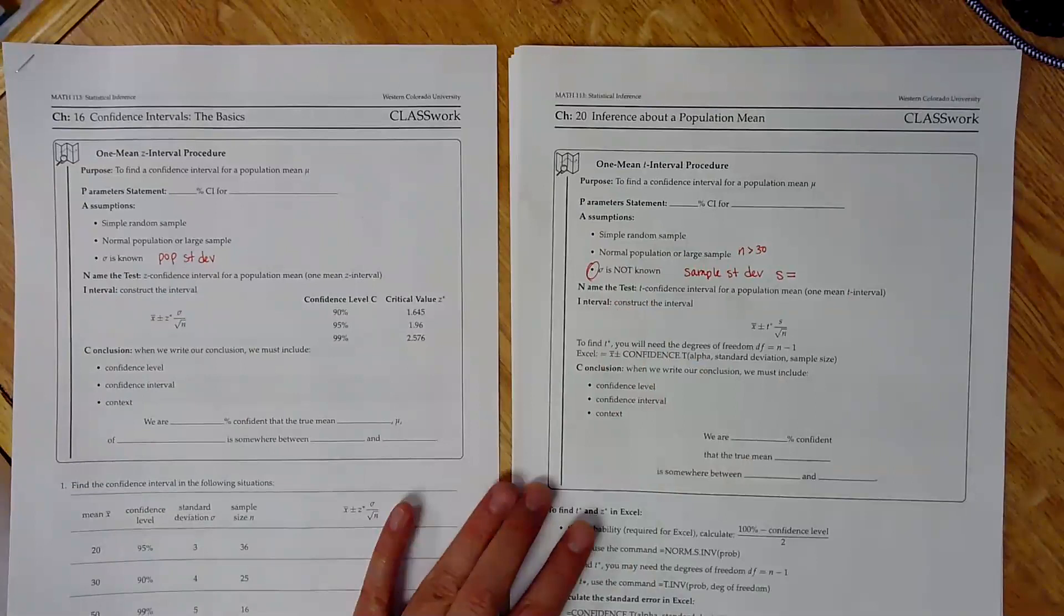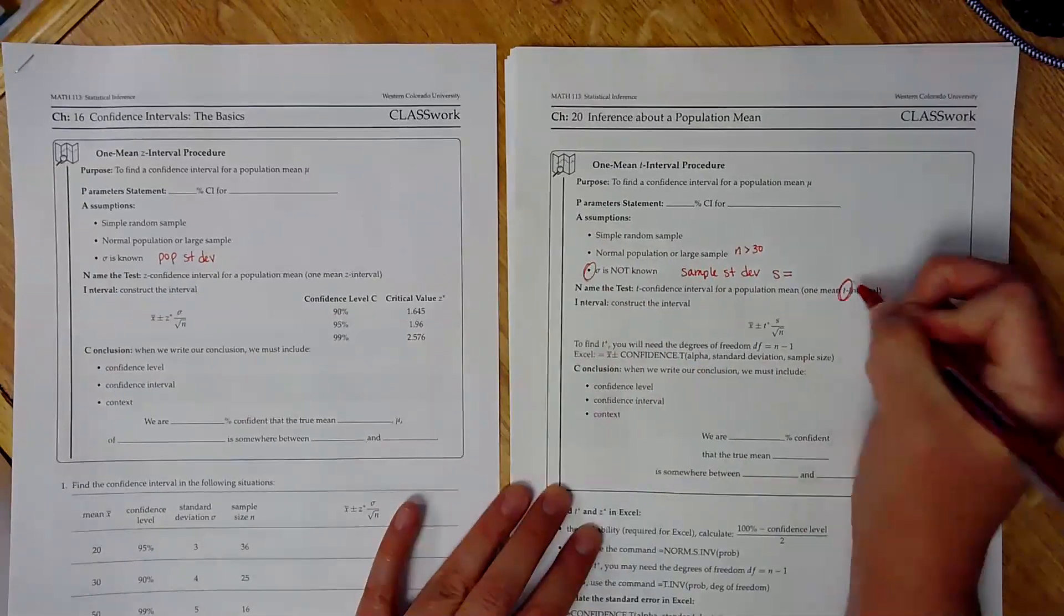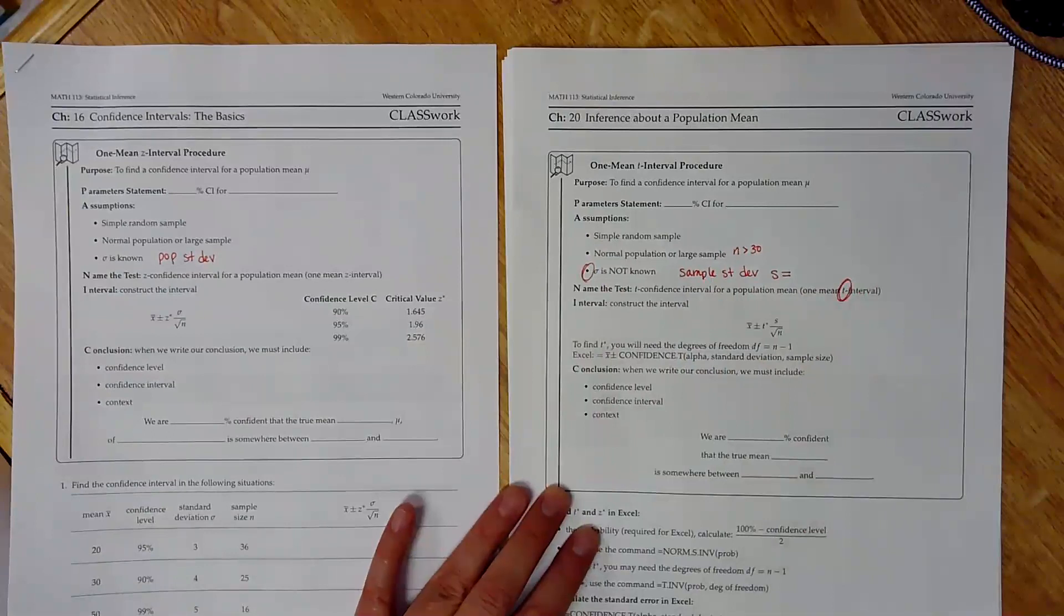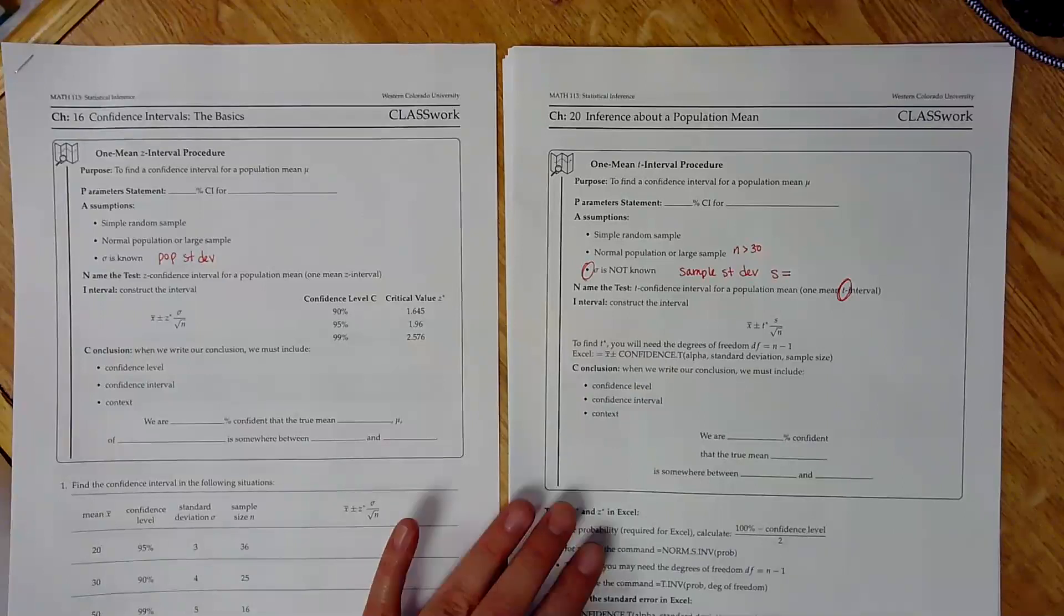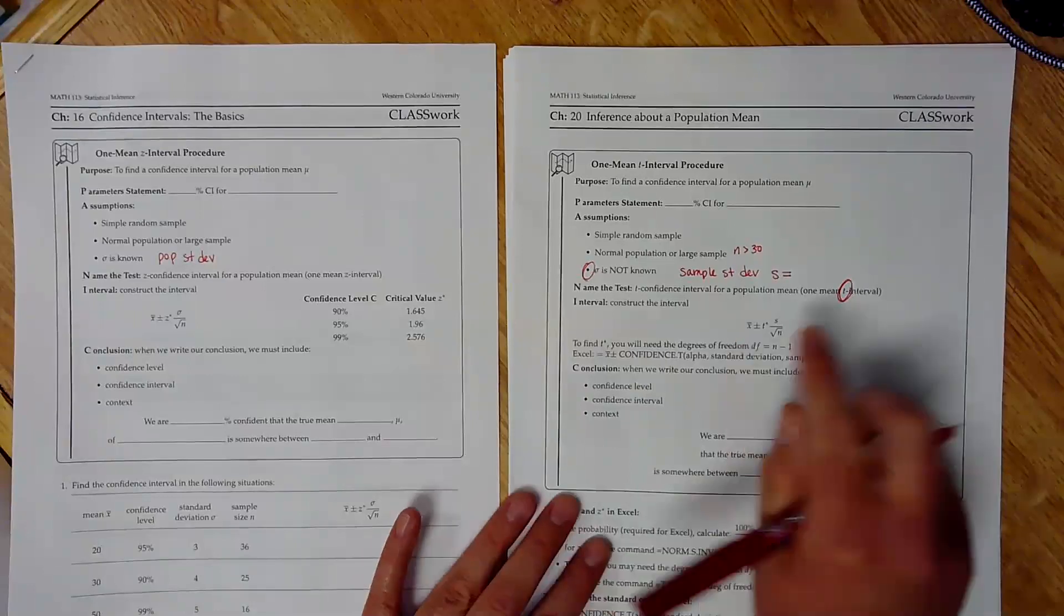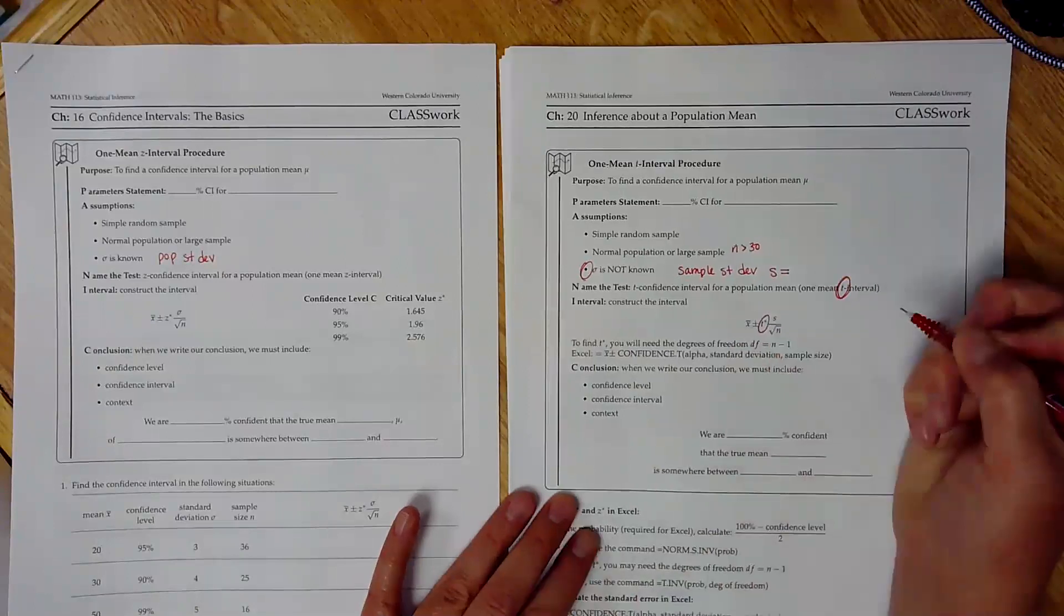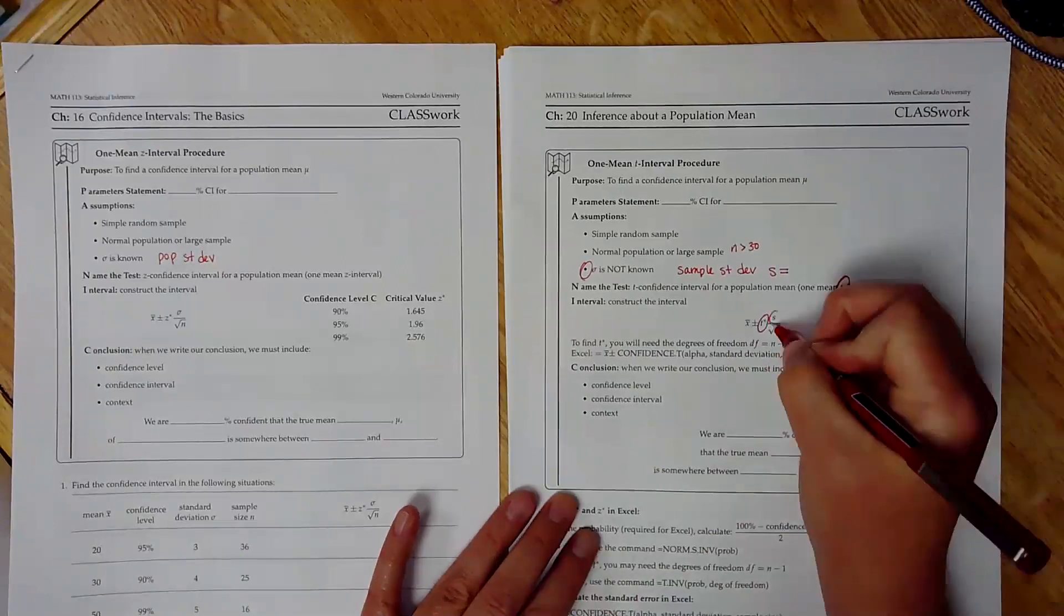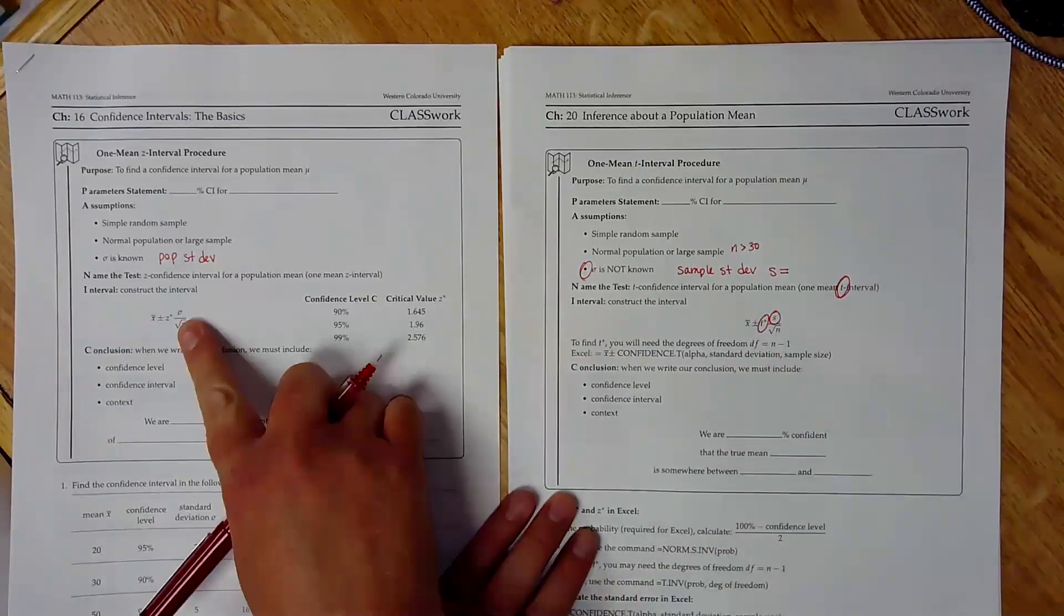Okay, another difference, the name of the test, this is a one-mean-t interval instead of a z. And then the way we construct our interval is a little bit different. So it's still centered at x bar, but instead of using z star, we're going to use t star instead. And we're going to use s, our sample standard deviation, instead of sigma.